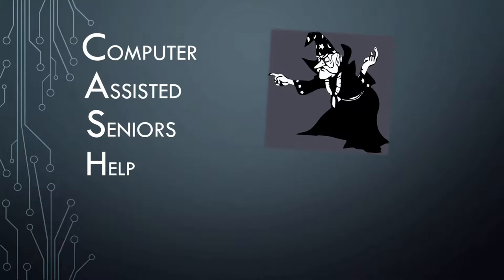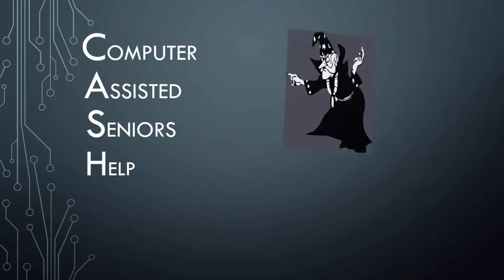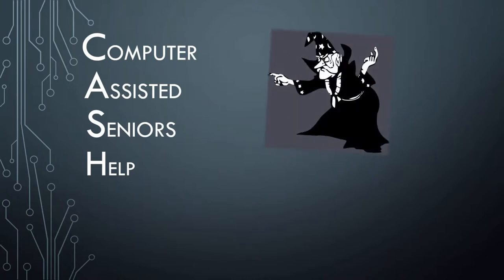When you reach a certain age, functions such as sight, hearing, and memory begin to fade. This video is one of several I have created to help senior citizens use their computers to make up for these shortcomings. My name is Richard Spring, also known as the Senior Wizard. I hope this video will help you make your life a little easier.